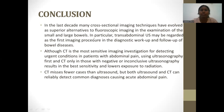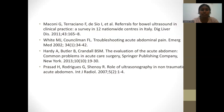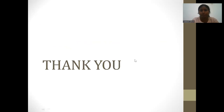In conclusion, in the last decade, many cross-sectional imaging techniques have evolved as superior alternatives to fluoroscopic imaging in examination of the small and large bowel. Trans-abdominal ultrasound should be regarded as the first imaging procedure in diagnostic workup and follow-up of bowel disease. Although CT is a more sensitive investigation for detecting urgent conditions in patients with abdominal pain, using USG first and then CT only in those with negative or inconclusive USG results maximizes sensitivity and lowers radiation exposure. Both USG and CT can reliably detect common diagnoses causing acute abdominal pain. These are the references. Thank you.